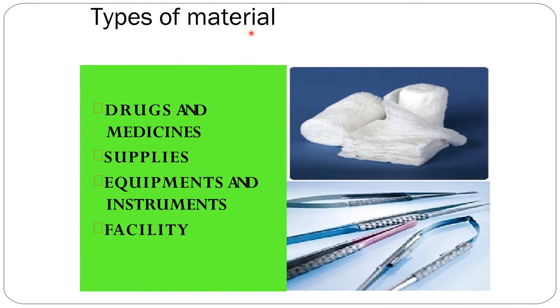Next we will see the different types of material. There are four categories: first, drugs and medicines; second, supplies; third, equipment and instruments; and fourth, facility.